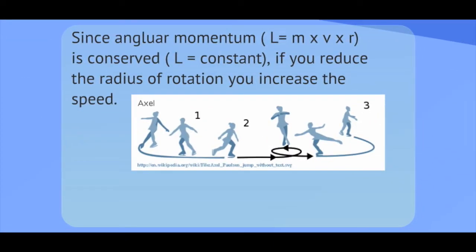So angular momentum then, which is the momentum times the distance r, or the mass times the velocity times the radius, is equal to a constant. And we give it the symbol L for angular momentum.